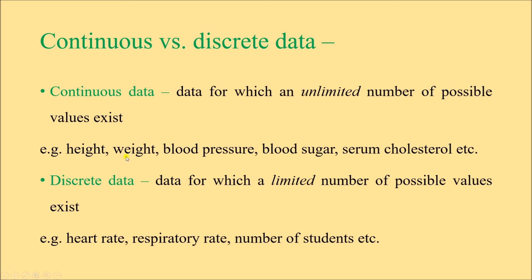For continuous data, consider body weight: any value is possible — 45 kg, 50 kg, 52.75 kg, 68.35 kg. Decimals and all values in between are possible. Similarly, serum cholesterol can be 120, 180, or 197.4. Since every possible number is a probability, these are continuous data.